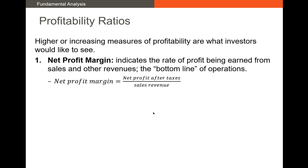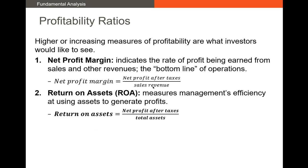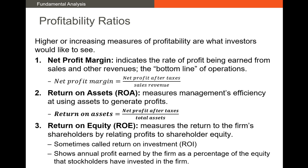Next we have profitability ratios, starting with net profit margin: profit over sales, expressed as a percentage. The higher the profit margin, the better. ROA, or return on assets, is net profit after taxes divided by total assets — we take total assets off the balance sheet and profit margin from the bottom of the income statement. ROE, or return on equity, is net profit divided by shareholders' equity. Higher numbers are better for all of these profitability metrics.